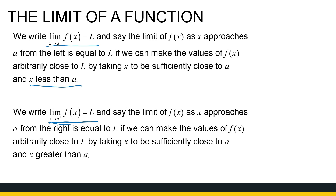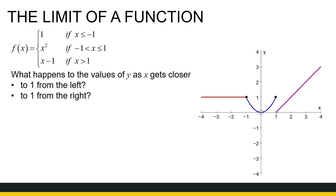So let's look at what this means. Here we've got a function f of x — it's a piecewise defined function, or compound function. If you're not familiar with those, you can look at the section on functions where we've explained them. I've got the sketch there just to make it easier. This function is defined for all real numbers; the domain of that function is all real numbers. So now we're asking: what happens to the values of y as x gets closer to 1 from the left and from the right?